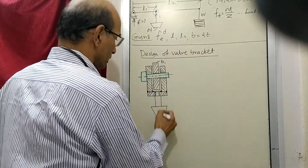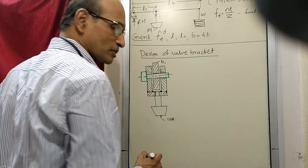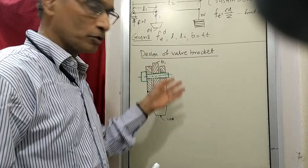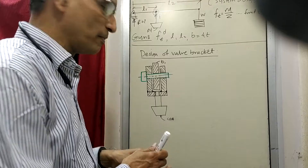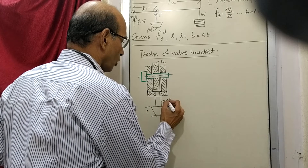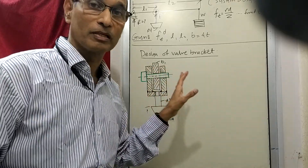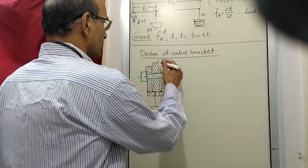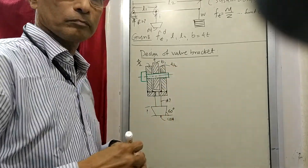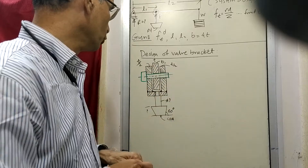Instead of making the whole bracket as one expensive solid piece, you can use three plates assembled together and fit to the wall with tapping. All dimensions can be found by proportion, similar to what was done for the fulcrum bracket. The cross-section area and diameter are given in the exercise, so that dimension is fixed. You can take the angle as 60 degrees, choose a suitable thickness, and decide the threading size. The thickness of the side plates will be t/2 here as well.